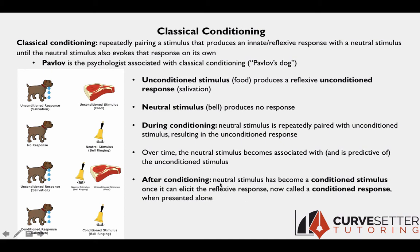After conditioning, the neutral stimulus has become a conditioned stimulus once the animal has been conditioned. Conditioning occurs once that neutral stimulus can also elicit the reflexive response. The response when elicited by the conditioned stimulus is called the conditioned response. The response is still salivation, but if elicited by the steak it's called the unconditioned response, and if elicited by the learned stimulus it's called the conditioned response — because that response had to be learned. After conditioning, the conditioned stimulus elicits the conditioned response because it is now predictive of the unconditioned stimulus.